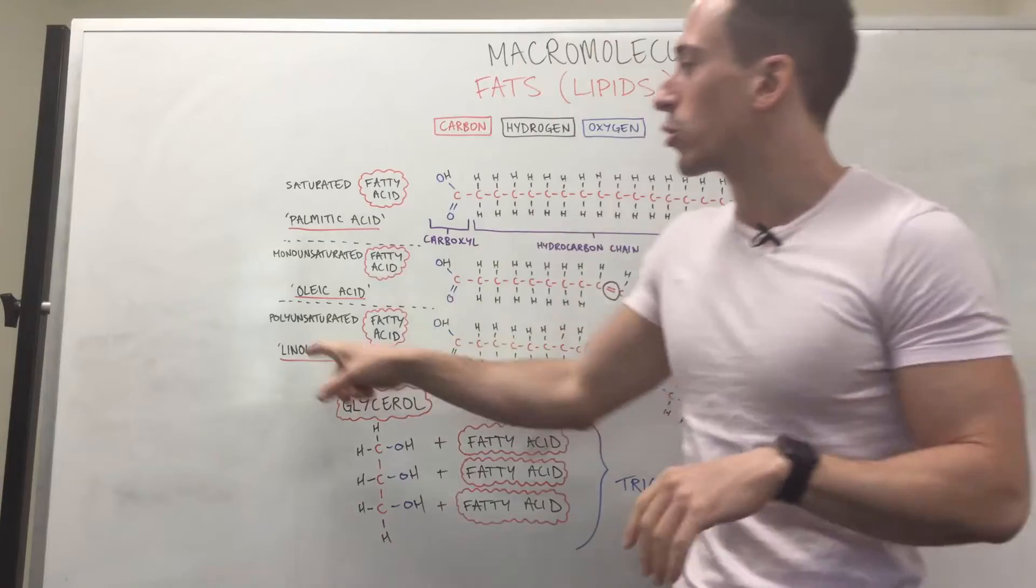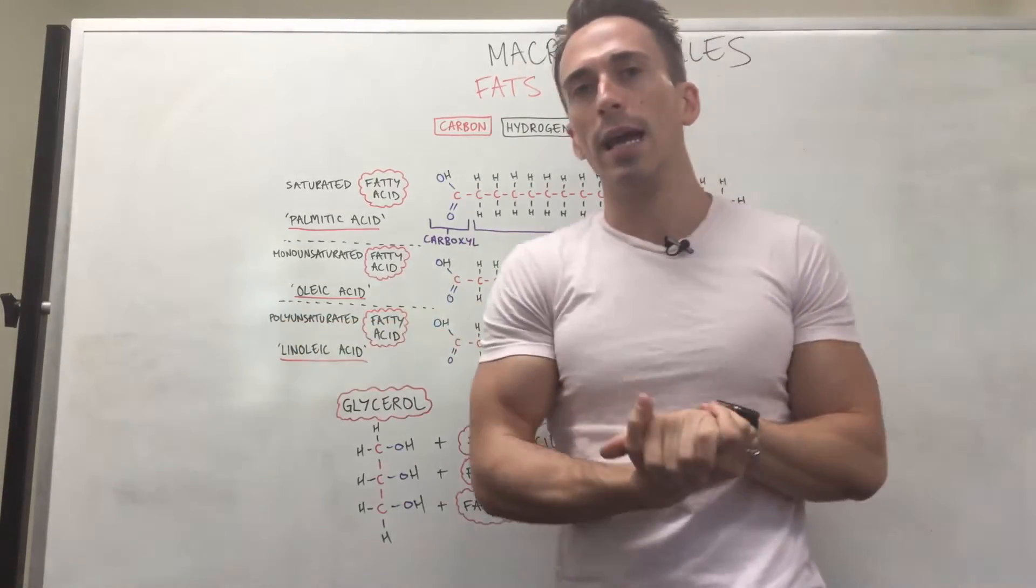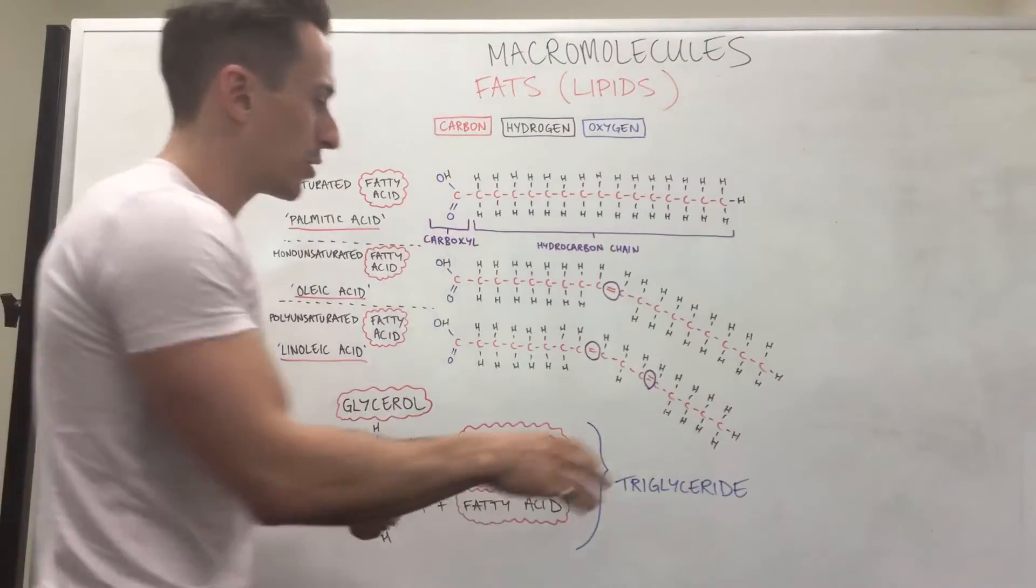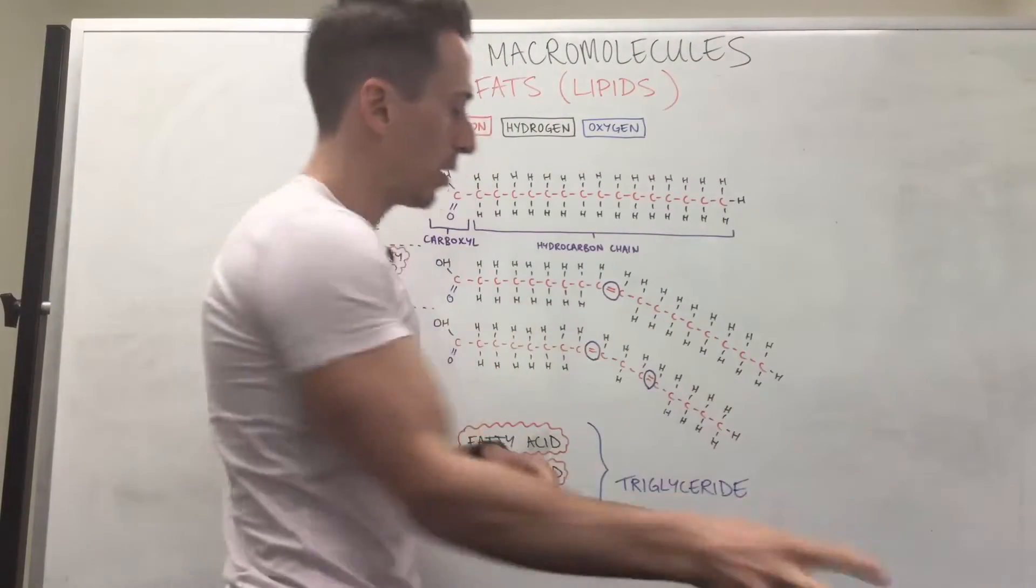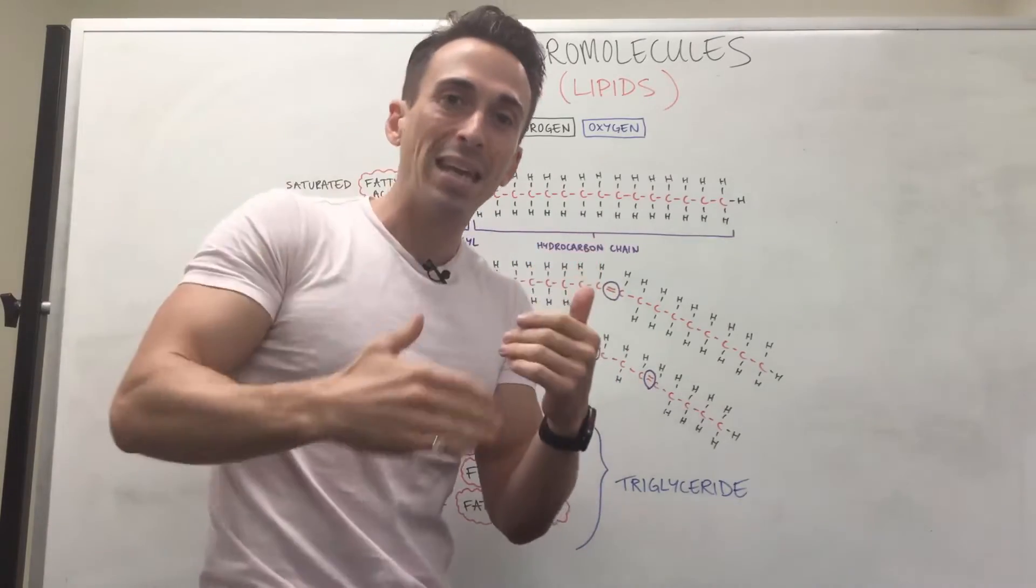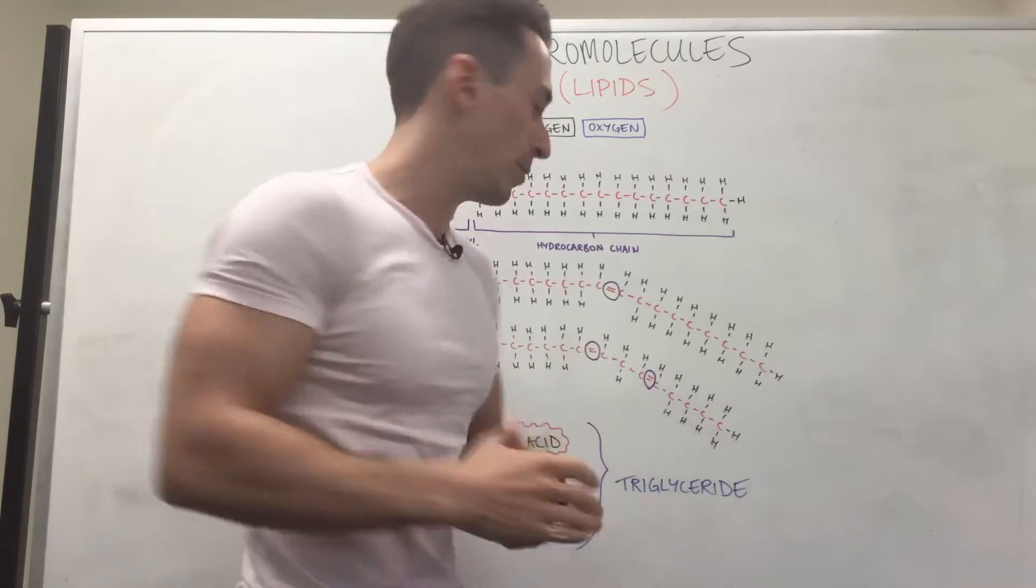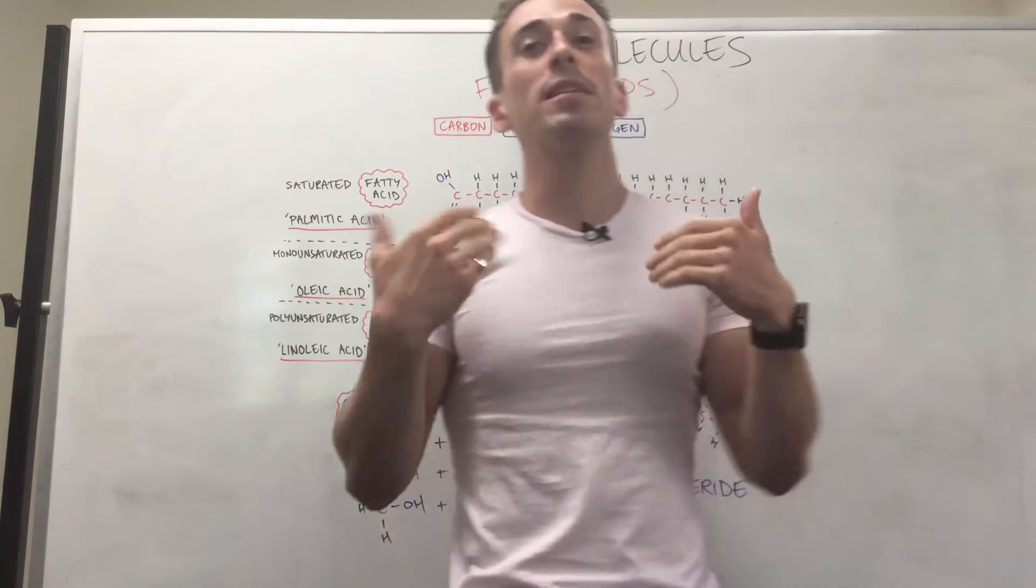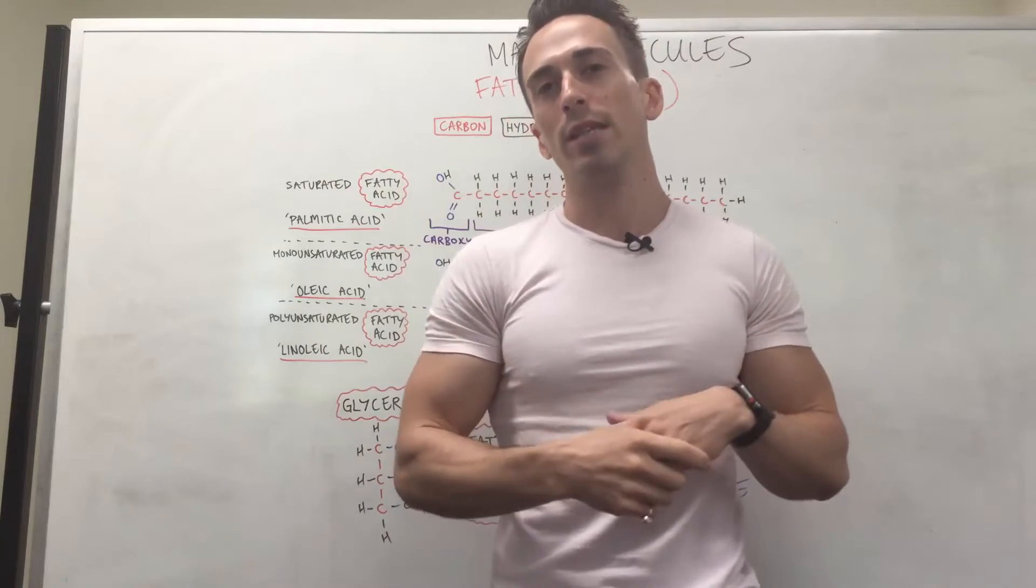Then we move down to something called a polyunsaturated fatty acid. The one I've drawn up here is linoleic acid. And it's got two double bonds. So polyunsaturated means many unsaturated carbons. And you can see two double bonds and that puts more of a kink into the fatty acid. And that means again, it's going to be liquid at room temperature.